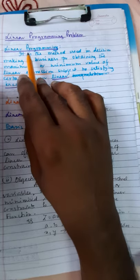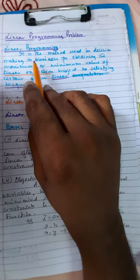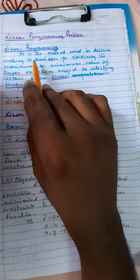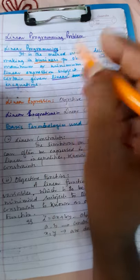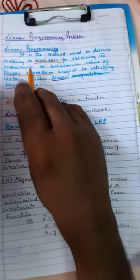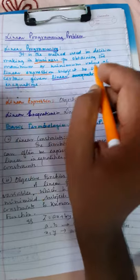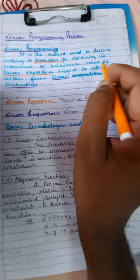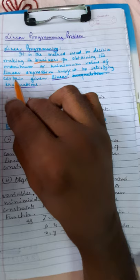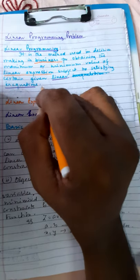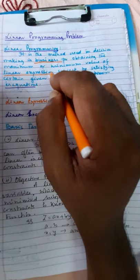What is linear programming? It is a method used in decision making, used in decision making in business, for obtaining the maximum or minimum value of a linear expression, subject to satisfying certain given linear inequalities.